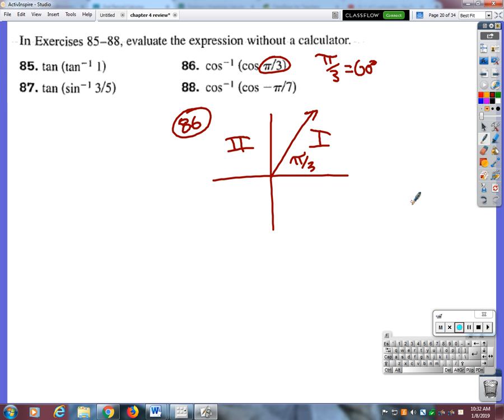The only time it would be something different is if this angle right here was in either quadrant 3 or 4, and then we'd have to flip it over the y-axis to get it into the right, or over the x-axis to get it in the right quadrant. Okay? Nope. Okay, and then your last question, Glory, was on which one? 93.